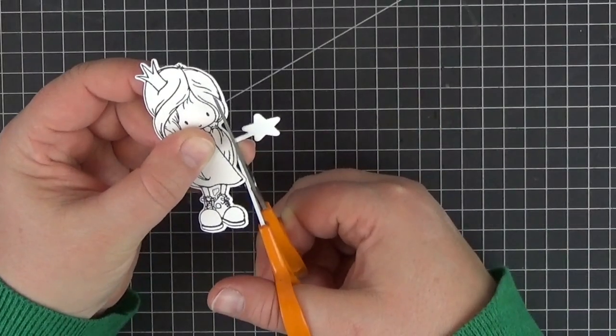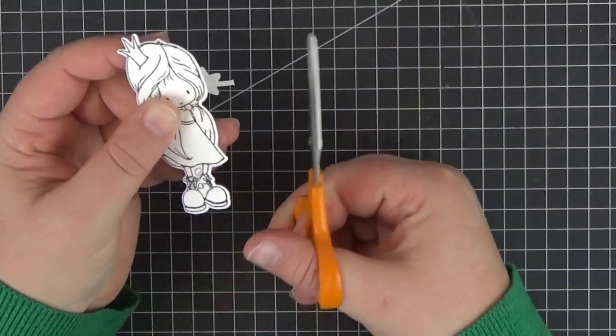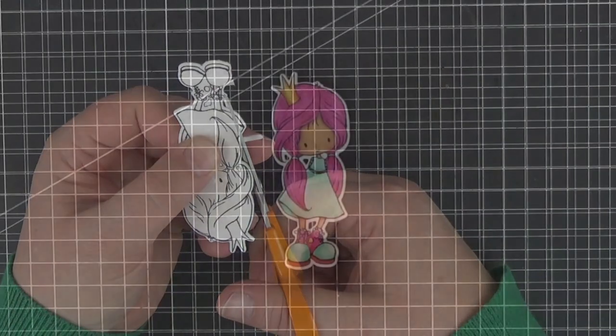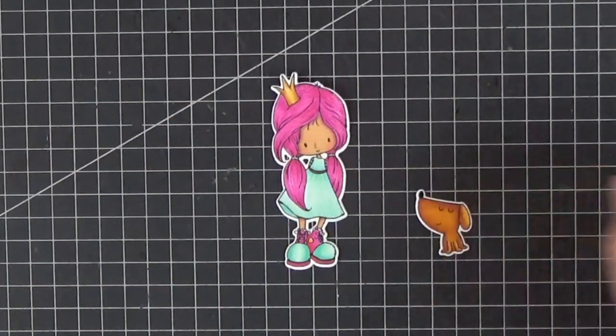After die-cutting her with the matching die we can simply trim the excess with a pair of scissors. I colored the girl and the little dog from the hot dog set with Copic markers off-camera.